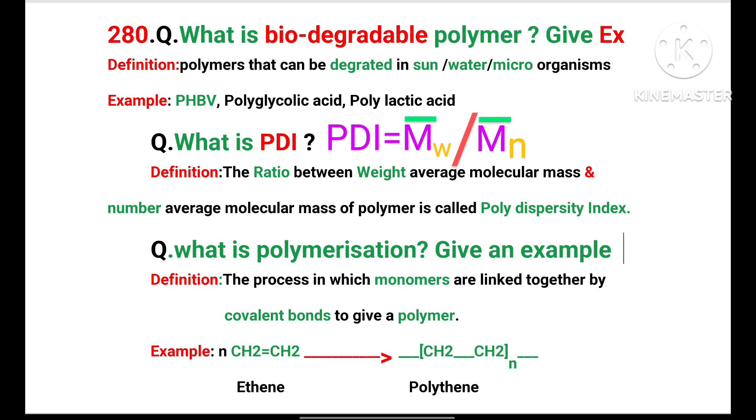What is polymerization? Give an example. The process in which monomers are linked together by covalent bonds to give a polymer.